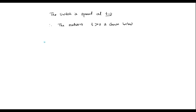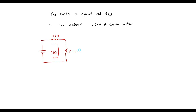So here we have an inductor, a resistor, and a capacitor. The current in the circuit is I of t, where L equals 1 Henry, R equals 1 ohm, and C equals 1 farad. Now for this circuit, we have to apply KVL.